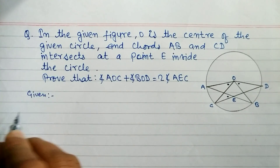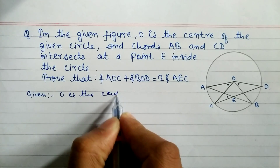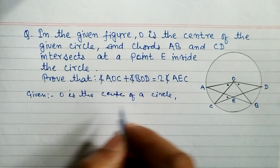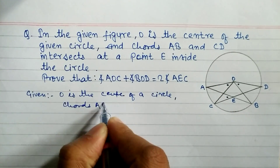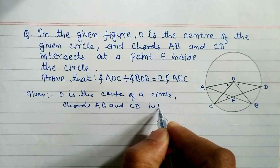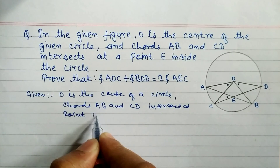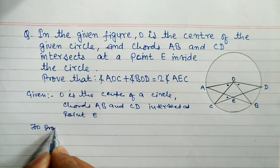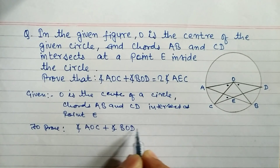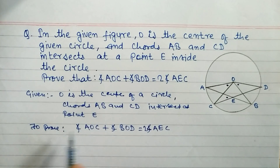First, let's write down what is given, what we have to prove, and the construction. Given: O is the center of the circle. Chords AB and CD intersect at point E. To Prove: angle AOC plus angle BOD equals two times angle AEC.